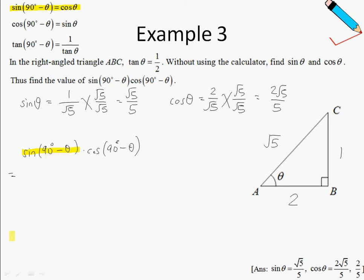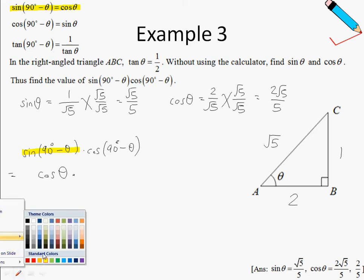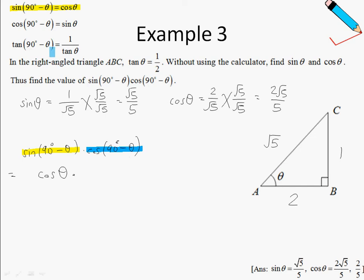So the sine of 90 degrees minus theta is actually just cosine of theta. So this can be converted to the cosine of theta. And the cosine of 90 degrees minus theta is simply sine theta.